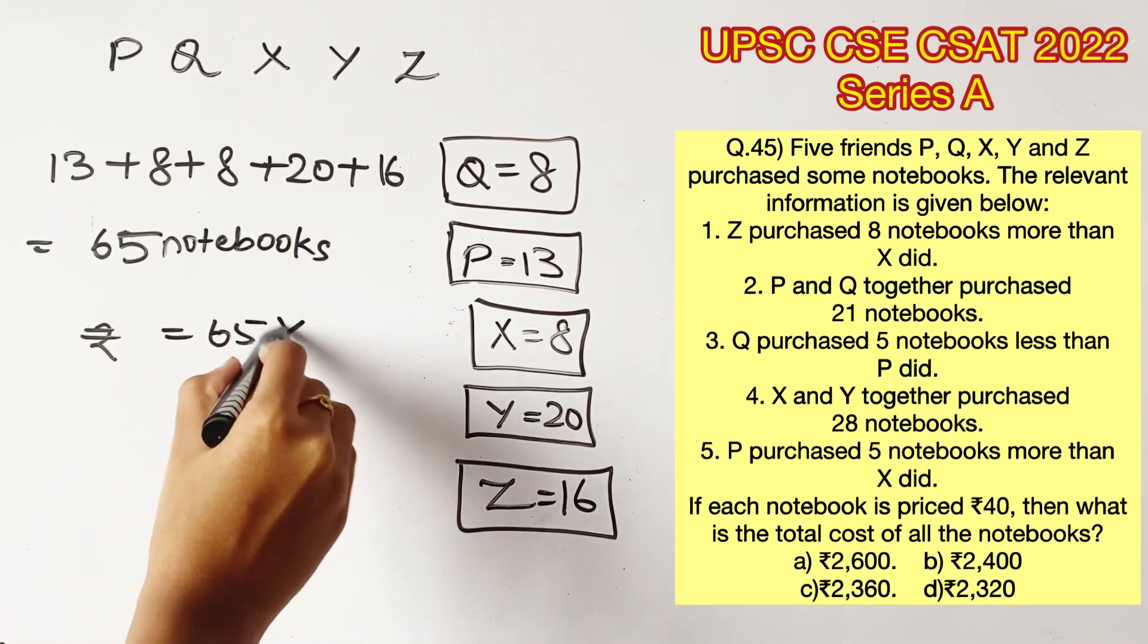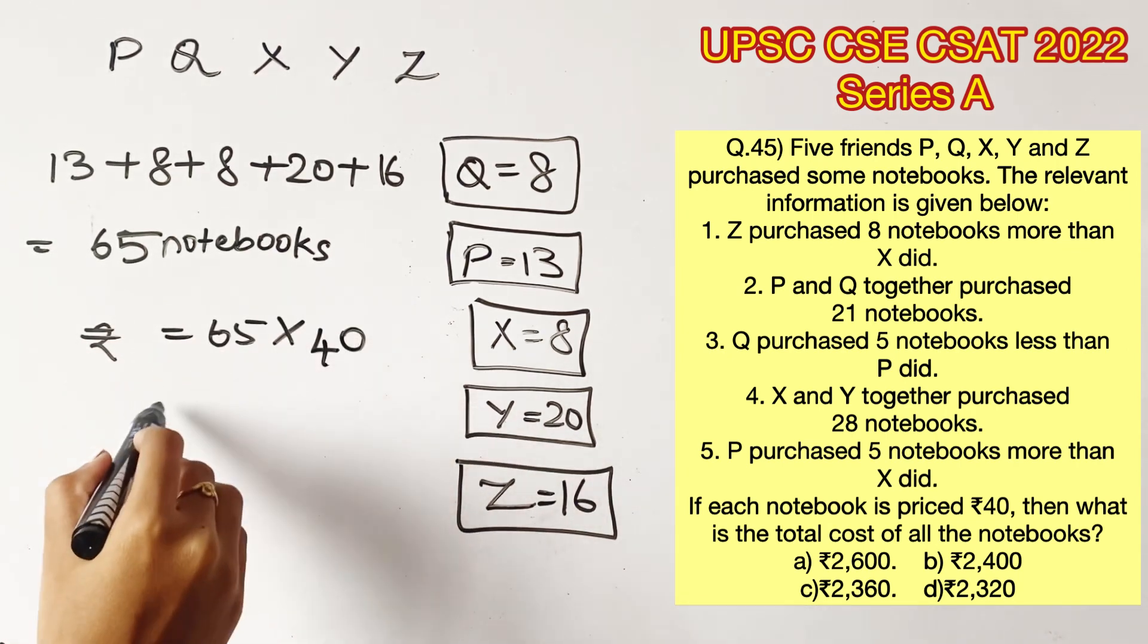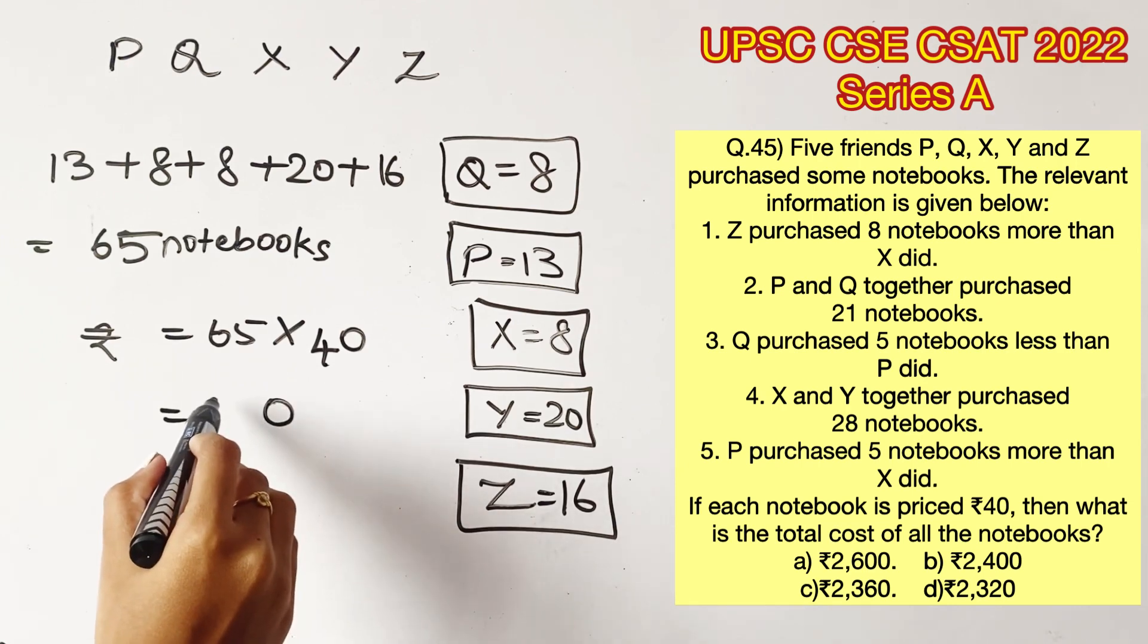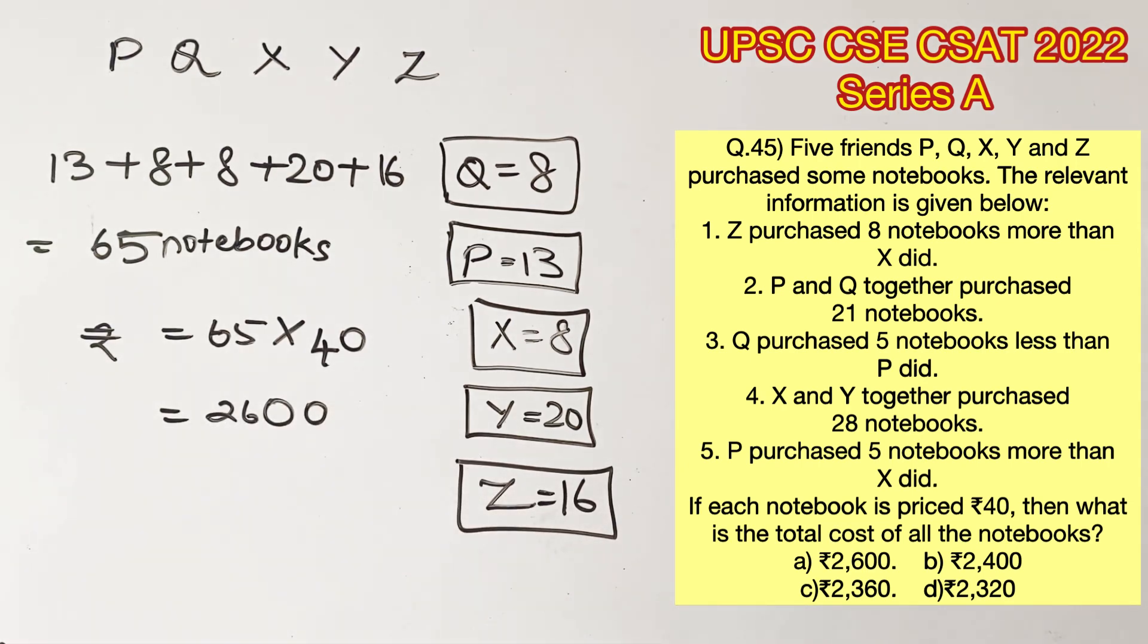They are saying one notebook costs 40 rupees. So we'll have to multiply 65 into 40 to get the total amount, which is 2600. So option A is the right answer.